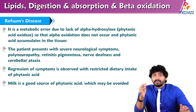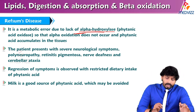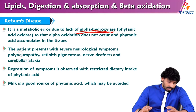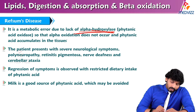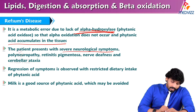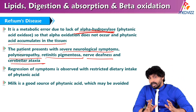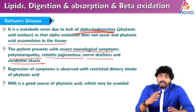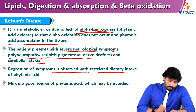Refsum disease is one of the clinically significant diseases. It is a metabolic error due to lack of alpha-hydroxylase. This hydroxylase reaction is important for alpha oxidation. Because of the enzyme deficiency, phytanic acid accumulates, resulting in Refsum disease. Alpha oxidation does not occur and phytanic acid accumulates in the tissues. The patient presents with severe neurological symptoms: polyneuropathy, retinitis pigmentosa, nerve deafness, and cerebellar ataxia. Because alpha oxidation mainly takes place in brain cells, mental retardation and neurological symptoms are common in Refsum disease. Regression of symptoms is observed with restricted dietary intake of phytanic acid — milk is a good source of phytanic acid which may be avoided if the person is suffering with Refsum disease.